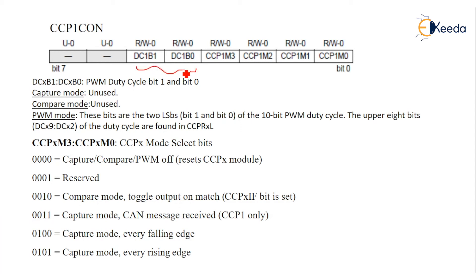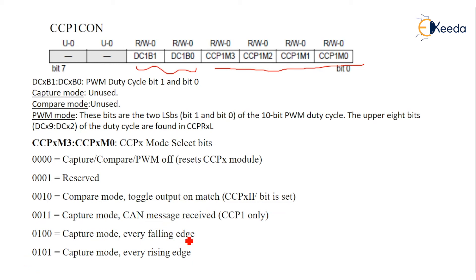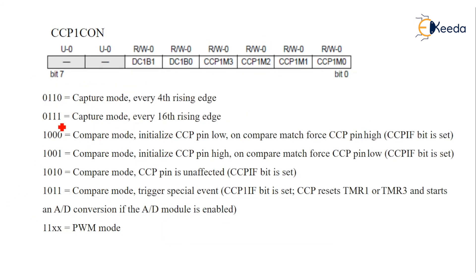Bit 3 (CCPxM3) decides the mode: if it is 0b0000, the CCP module is off. If 0b0001, it is reserved for compare. 0b0010 toggles the CCPx pin. In capture mode the options are: every falling edge, every rising edge, every 4th rising edge, or every 16th rising edge — giving four combinations of capture mode.